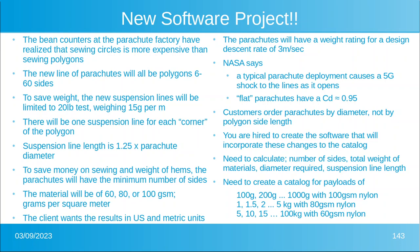Let's do a new software project. The bean counters of the parachute factory have realized that sewing circles is a lot more expensive than sewing polygons, so the new line of parachutes will all be polygons from 6 to 60 sides. To save weight, the new suspension lines will be limited to a 20-pound test; the lines weigh 15 grams per meter. There will be one suspension line for each corner of the polygon; suspension line length is 1.25 times the diameter. The material will be 60, 80, or 100 grams per square meter. The client wants results in US and metric units. The parachutes will have a weight rating for a design descent rate of 3 meters per second. NASA says that when the parachute opens you get a 5g shock to the lines.